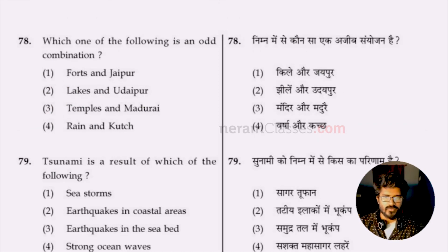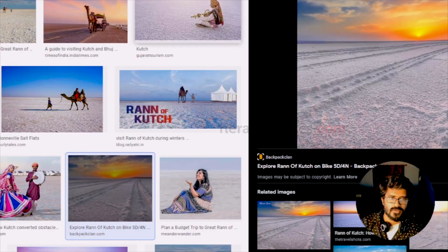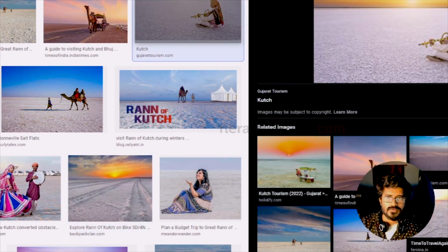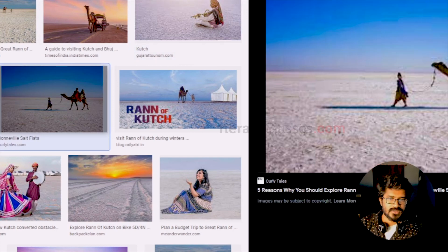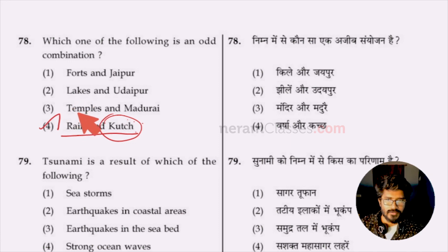Question 78: which is a wrong art combination — Fort Jaipur, Lakes Udaipur, Temples Madurai, or Rain Kutch? Jaipur is famous for forts, Udaipur is known as the city of lakes, Madurai is known as the temple city. However, Kutch in Gujarat is known for its white desert — not for rain. Kutch is a desert so it does not receive significant rain. Option four, Rain Kutch, is the wrong combination.